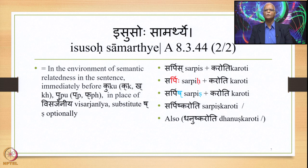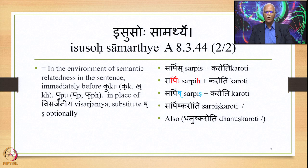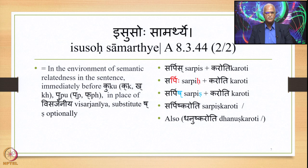For example: Sarpis plus Karoti. Sarpis is semantically related with Karoti (he/she/it does). Sarpis refers to Ghee — this is the accusative singular of Sarpis. The sentence means somebody is doing the Ghee action — Sarpis Karoti. Sarpis has got S immediately preceded by E, and is semantically linked with the action denoted by verbal root Kru in Karoti, at the beginning of which is Ka.